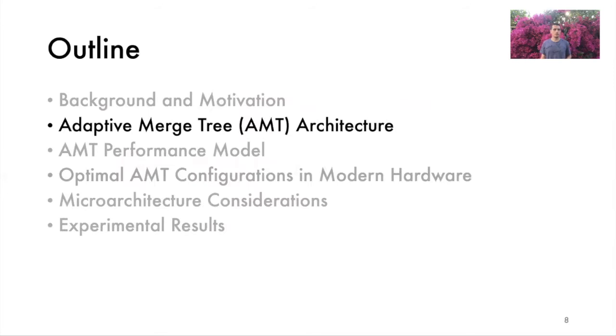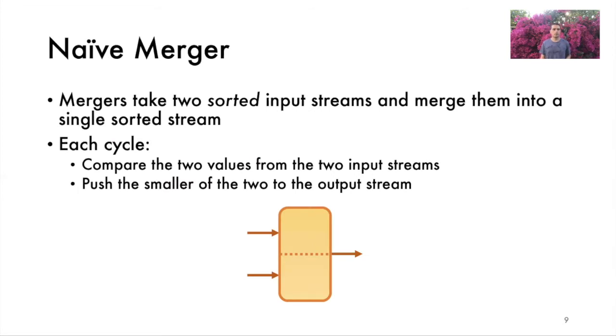First, let's see how Mergers and Merge Trees work. Hardware mergers merge two sorted input arrays. For example, the merger in the figure will merge the sorted arrays 1, 3, 5, 7 and 2, 4, 6, 8. It reads the top values from its two input streams, compares them, and outputs the smaller value, and this process repeats on every cycle.